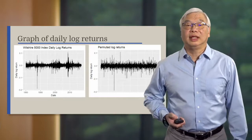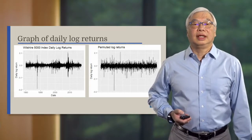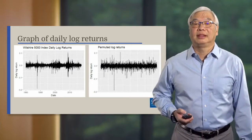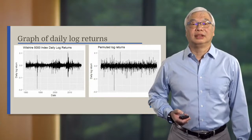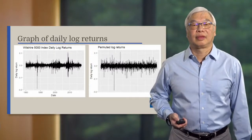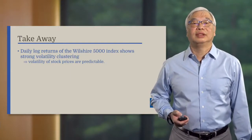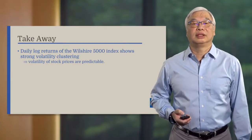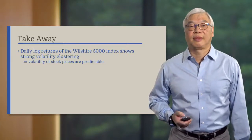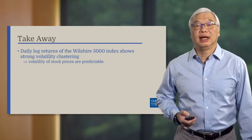To show this in another way, here are the graphs of the original log return data on the left — it has volatility clustering. Now look at the graph on the right: it is the same log returns, but they are randomly reordered, and it shows no volatility clustering. So here is the takeaway: the daily log returns of the Wilshire 5000 Index show strong volatility clustering. This means the volatility of stock prices is predictable. Now it is your turn to check for volatility clustering in the data you downloaded from FRED.